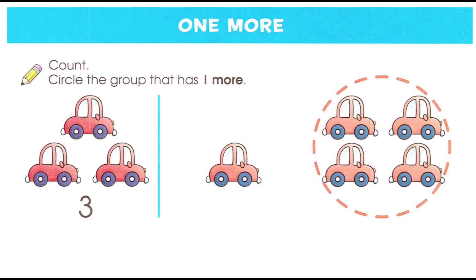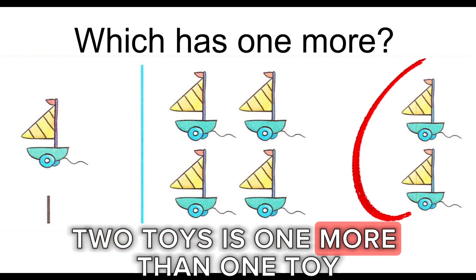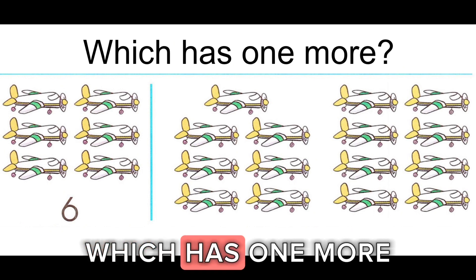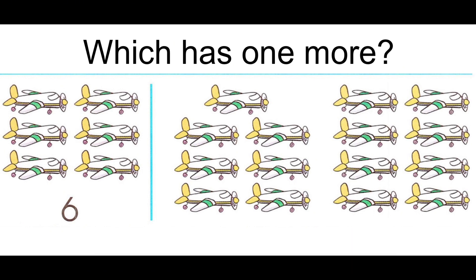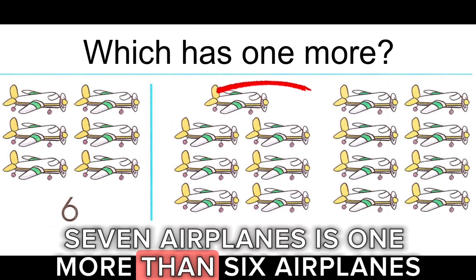One more. Count. Circle the group that has one more. Four is one more than three. Two toys is one more than one toy. Which has one more? Seven airplanes is one more than six.